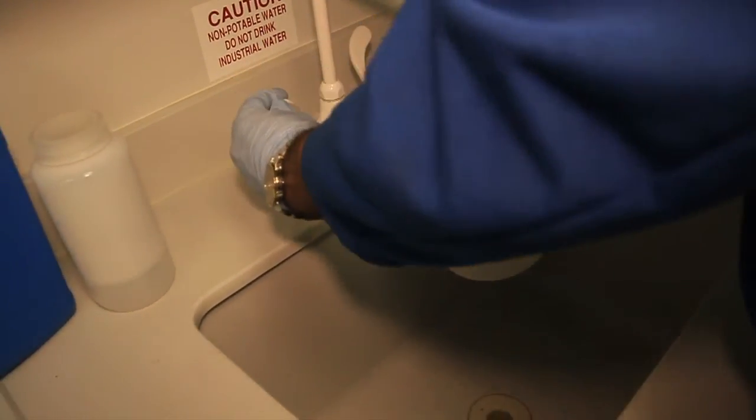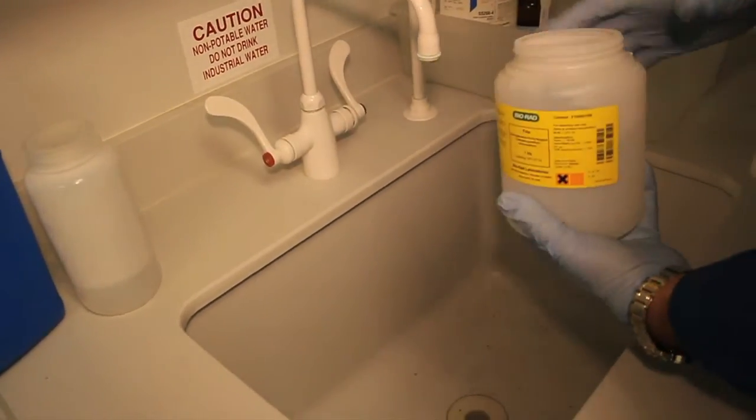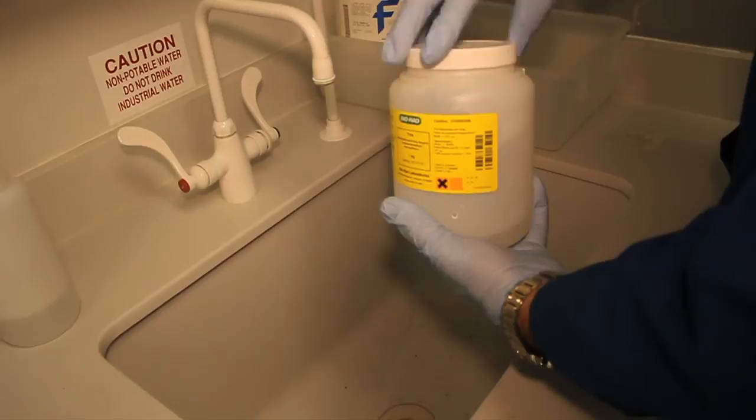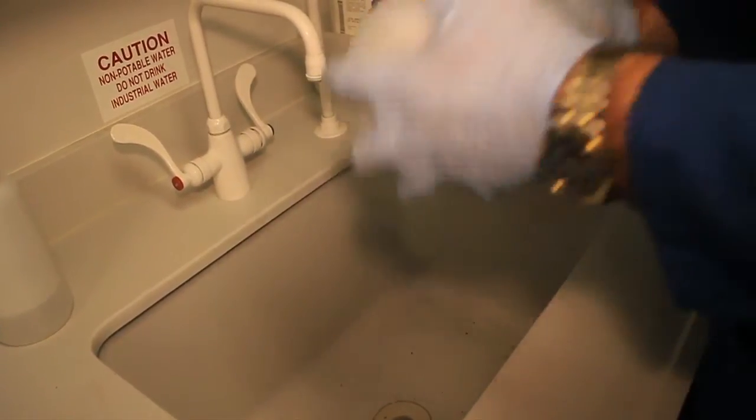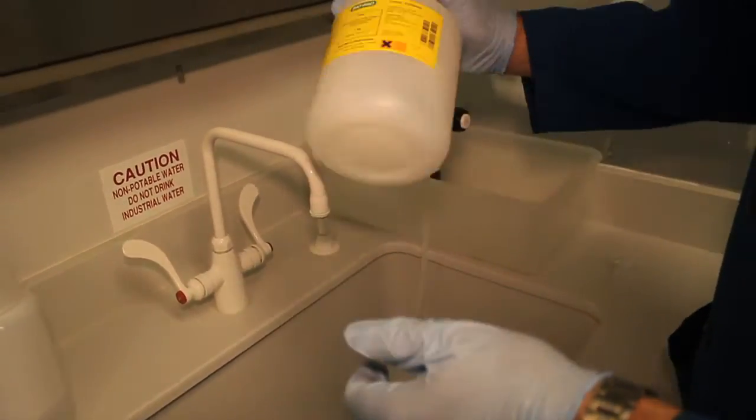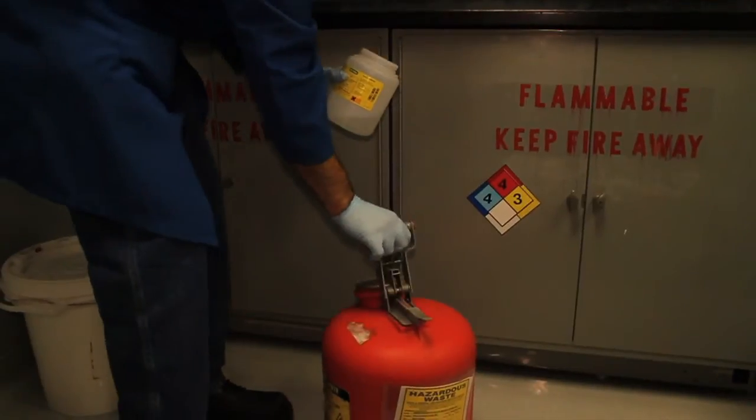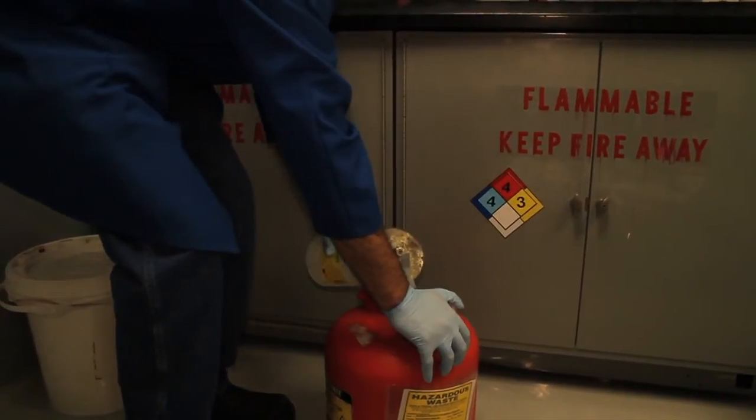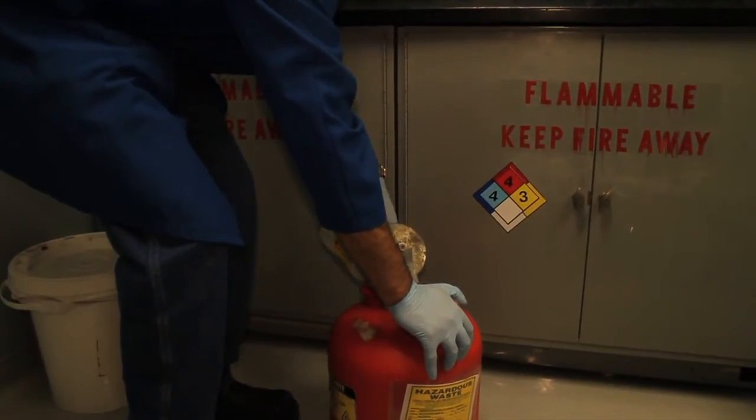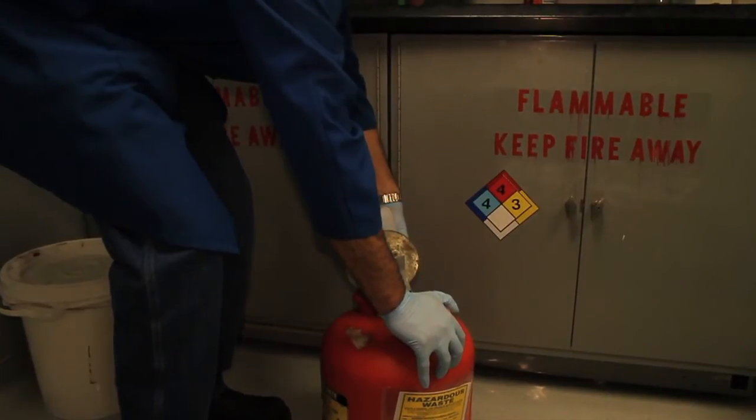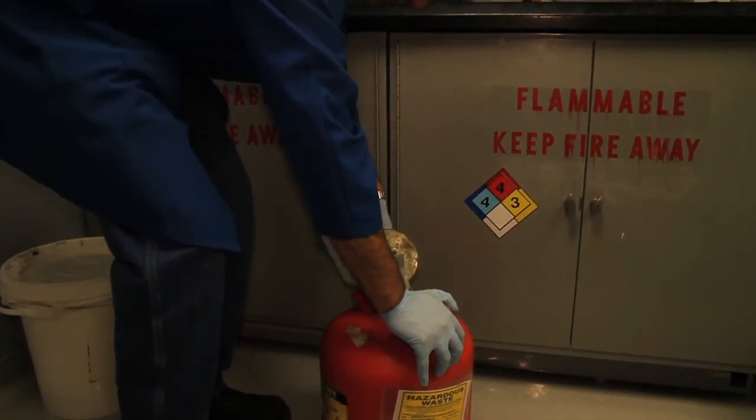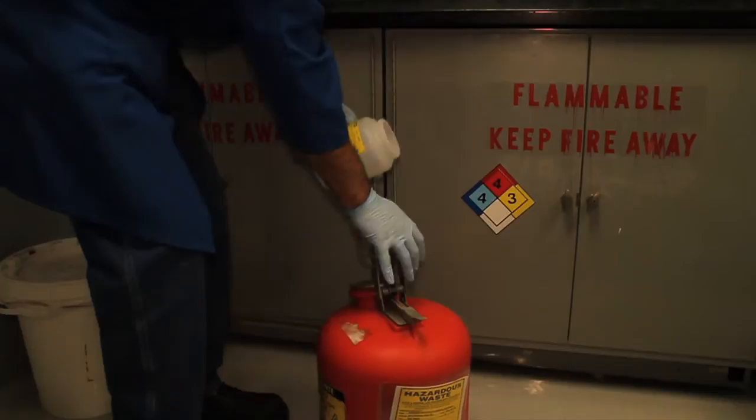If not, fill the empty container with a little bit of water. Now pour this mix into the flammable organic solvent waste container. Repeat this process three times.